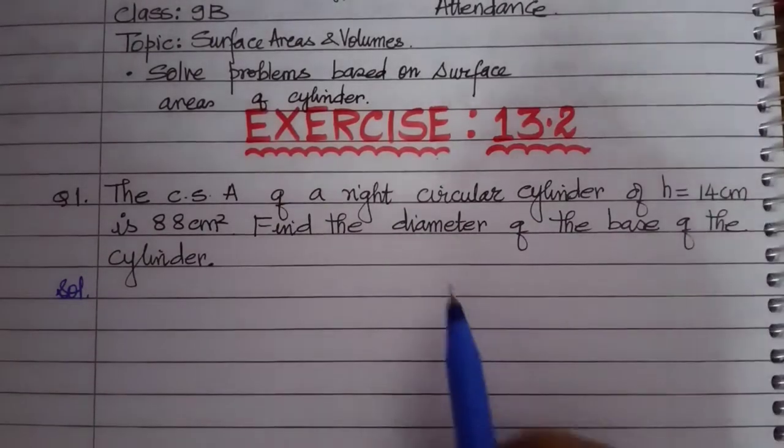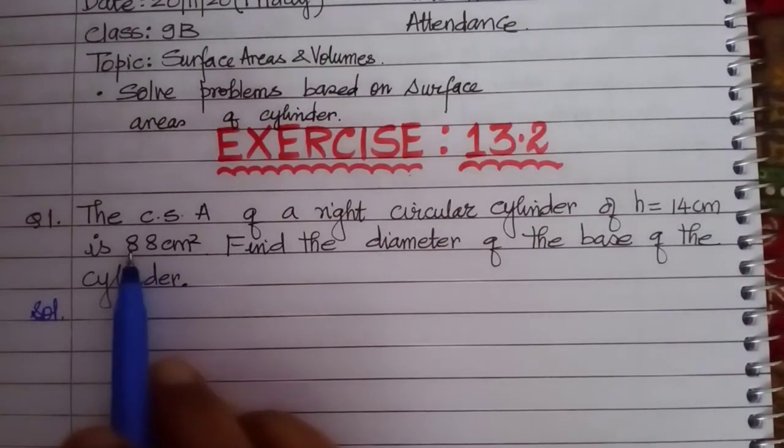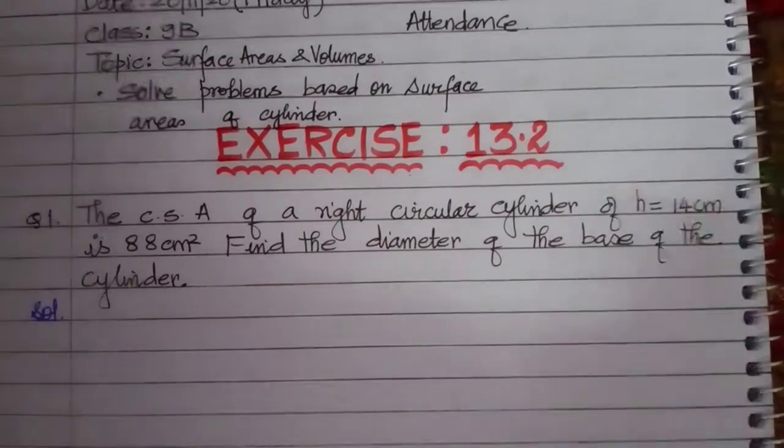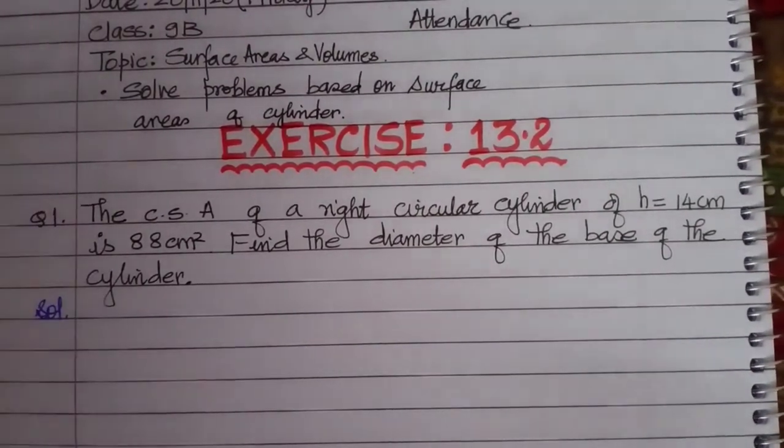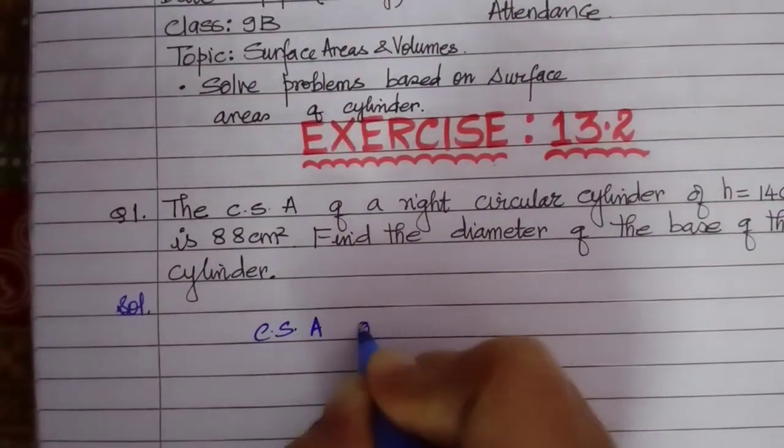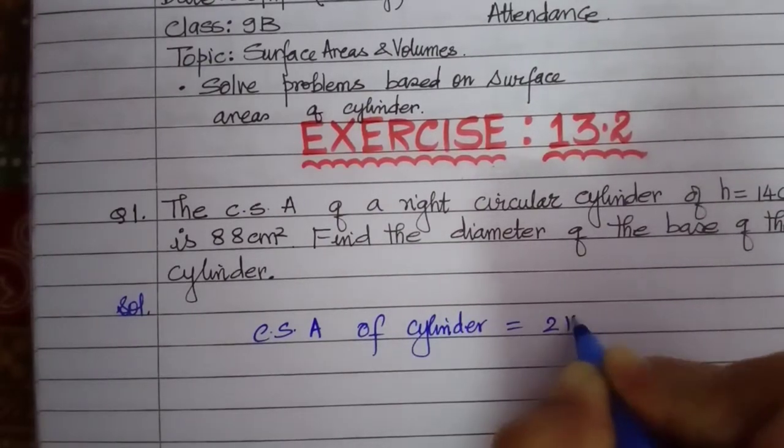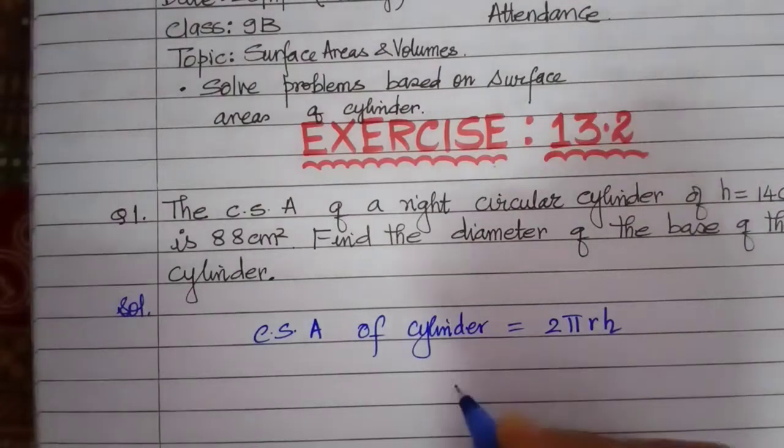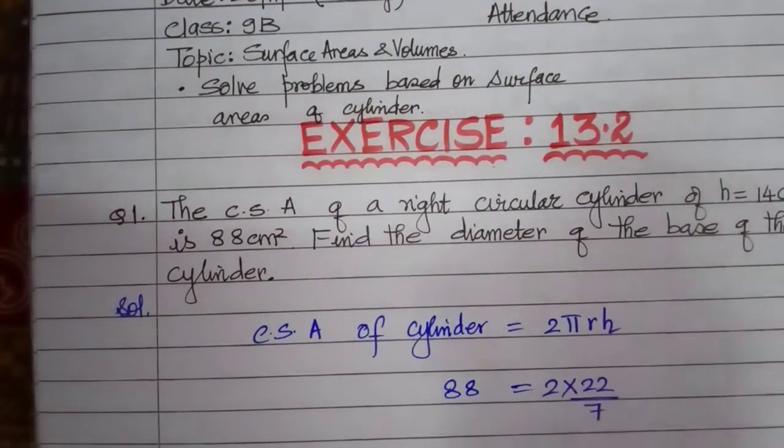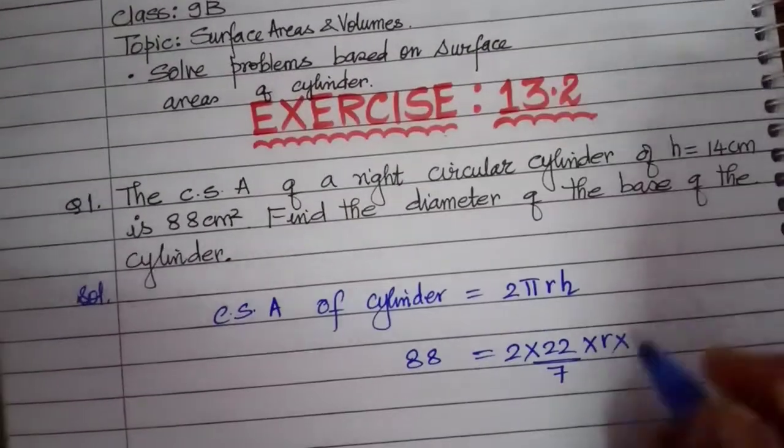The CSA of a right circular cylinder of height 14 is 88 cm². Find the diameter of the cylinder. First of all let us see what is the CSA of cylinder formula. We know it is 2πRH and CSA is given as 88. Pi we know as usual it is 22 by 7. We don't know the radius. Height is given as 14.